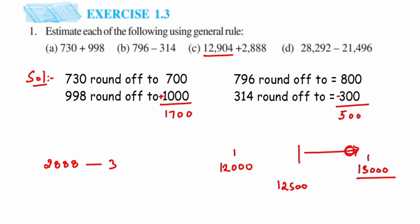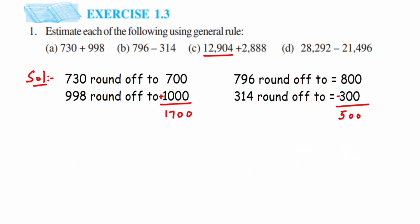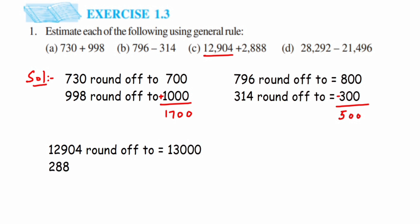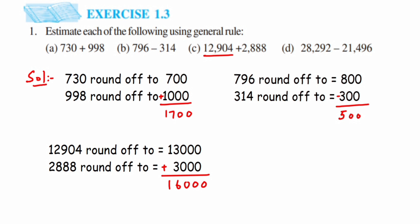The second number, 2888, is greater than 2500 and closer to 3000, so it rounds up to 3000. Writing it down: 12904 rounds to 13000 and 2888 rounds to 3000. Since the operation is addition, 13000 + 3000 = 16000. The estimated sum is 16000.